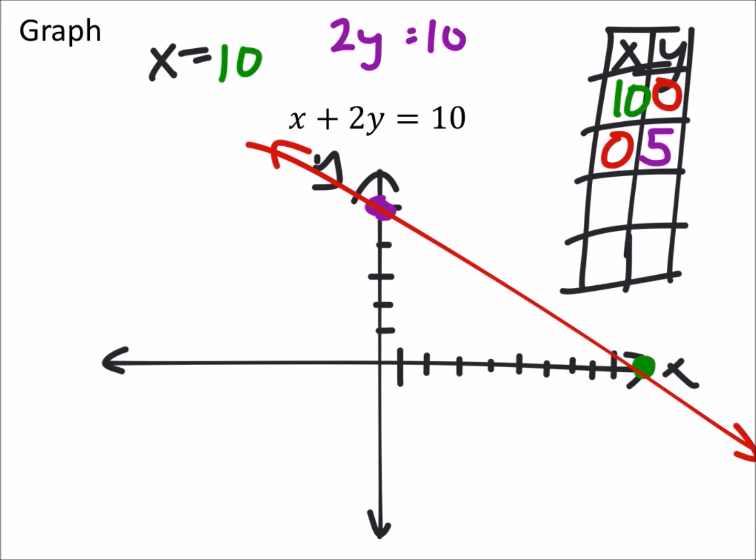Specifically, I'm going to use Y is 1 just because 1 is a pretty easy value to work with. Now, what that does is it gives us X plus 2 times 1, which is 2 equals 10. And what plus 2 is 10? Well, that tells us X is 8.